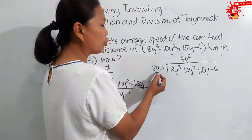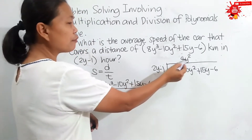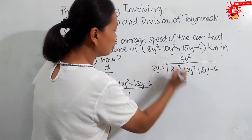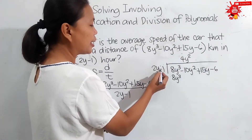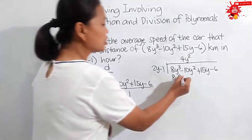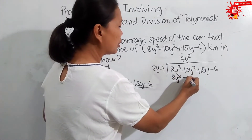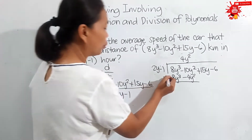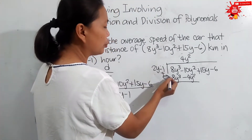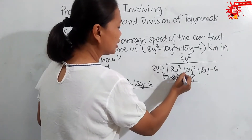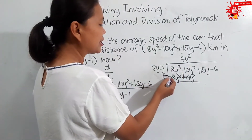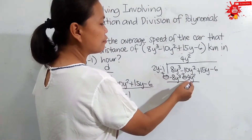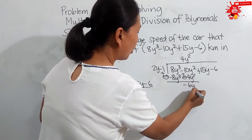We multiply 4y squared by 2y minus 1. So, 4y squared times 2y is 8y cubed — aligned with 8y cubed since they are similar terms. Then, 4y squared times negative 1 is negative 4y squared — aligned with negative 10y squared since they are similar. We proceed to subtraction: change to addition, making 8y cubed negative and negative 4y squared positive. So, 8y cubed plus negative 8y cubed is 0, and negative 10y squared plus positive 4y squared is negative 6y squared.